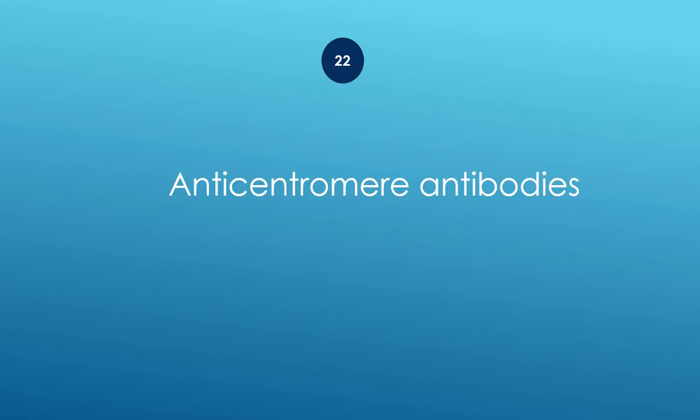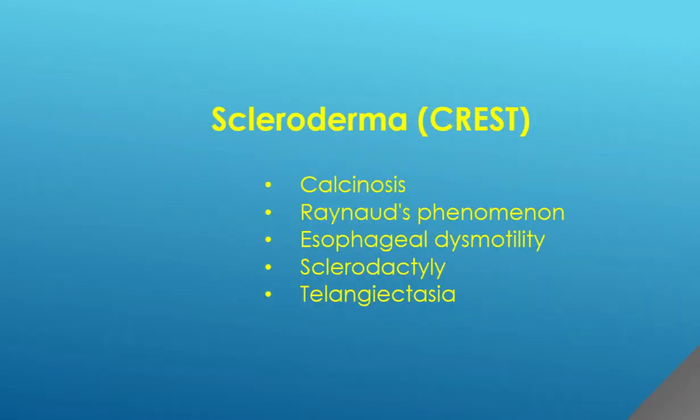Anticentromere antibodies — scleroderma, CREST. C for calcinosis, R for Raynaud phenomenon, E for esophageal dysmotility, S for sclerodactyly, and T for telangiectasia.